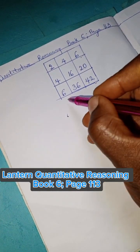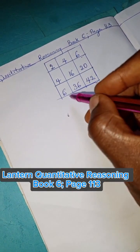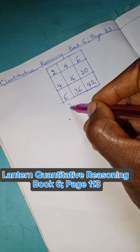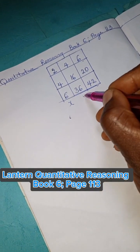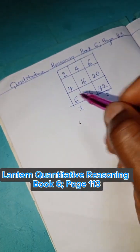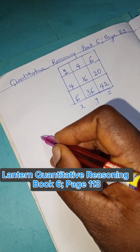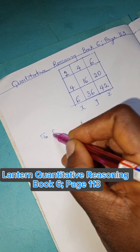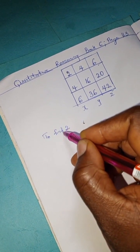Welcome to Quantitative Reasoning Book 6, Page 113. Here we have this rule X, and we label Y and Z. We're going to look at this, so let's find 2 on this rule.